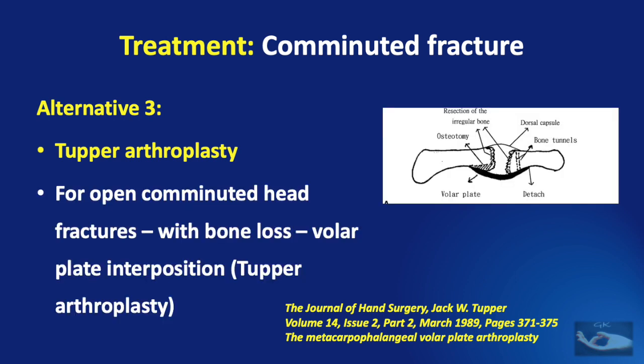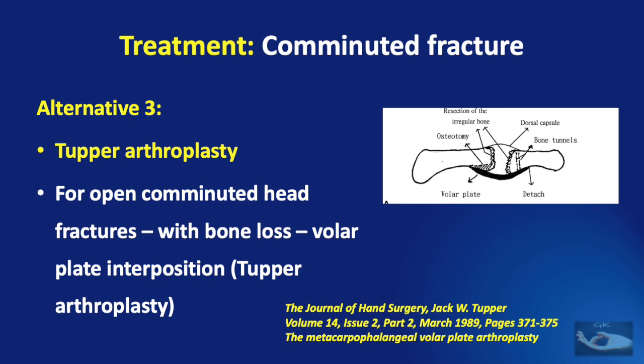By the Tupper Arthroplasty technique, for open comminuted head fractures with bone loss, the volar plate is interposed between the base of the proximal phalanx and the head of the injured metacarpal. This ensures an acceptable range of movements of the metacarpophalangeal joint without causing ankylosis.